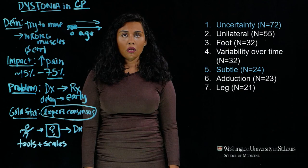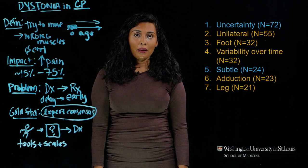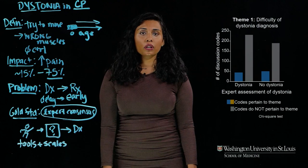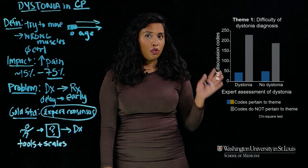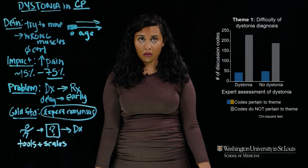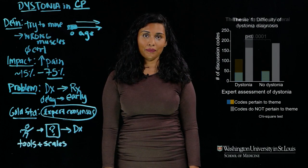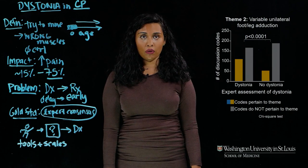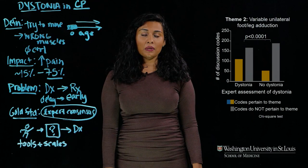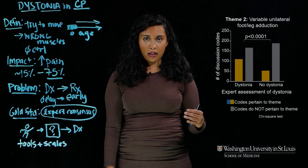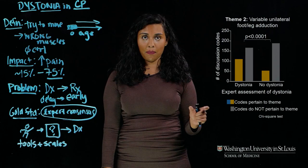One theme was that dystonia is difficult to diagnose. The other theme highlighted key movement features specific to movement that might trigger an expert to diagnose dystonia. For the difficulty theme, there was no real difference between videos where experts ultimately diagnosed dystonia versus not. But for theme two — variable unilateral adduction of the leg or foot — it was significantly more common for experts to cite that theme when they were diagnosing dystonia in a video.